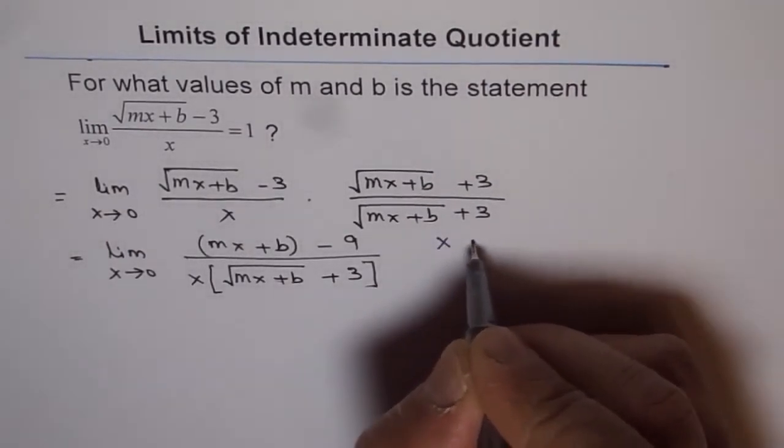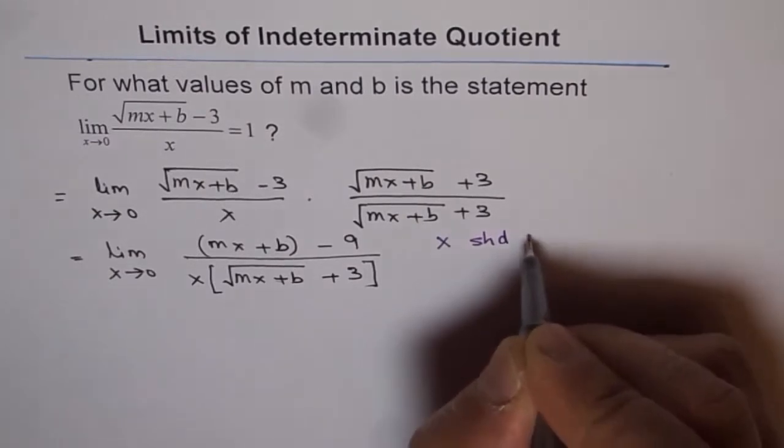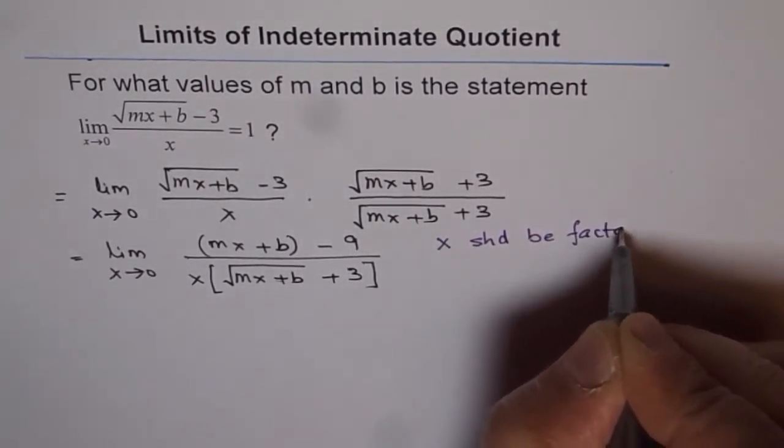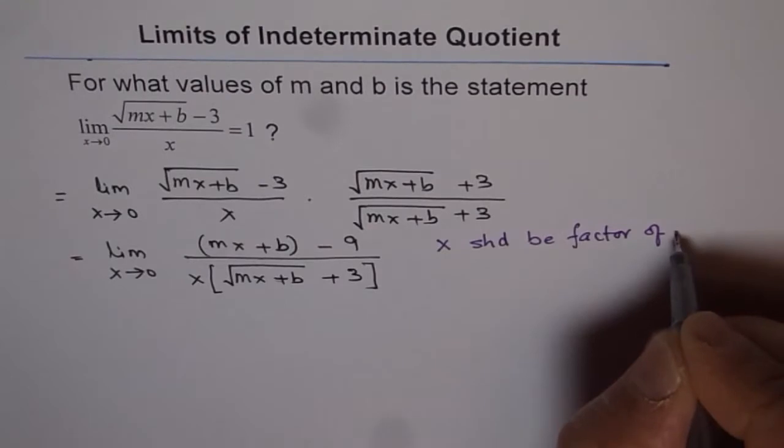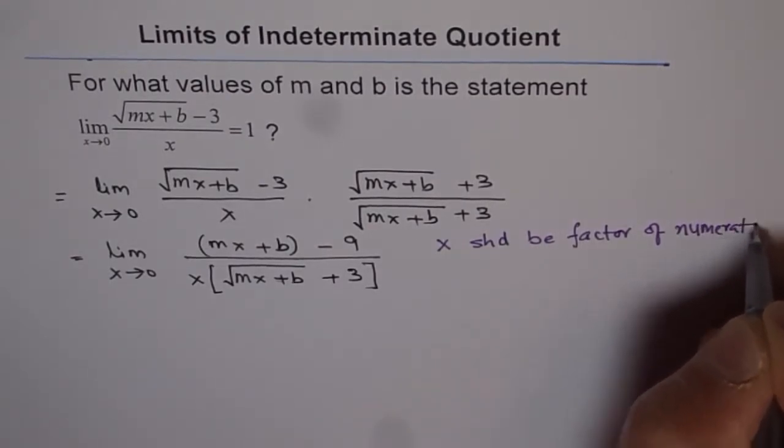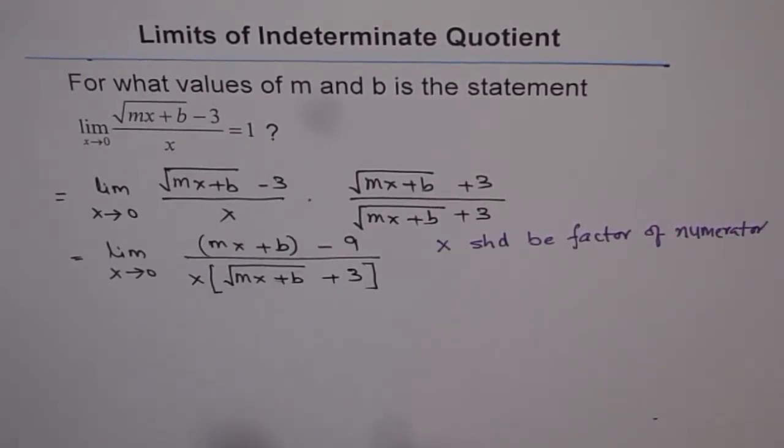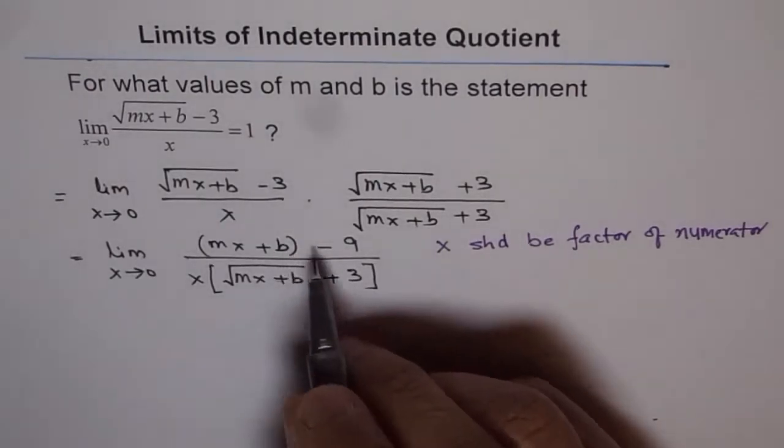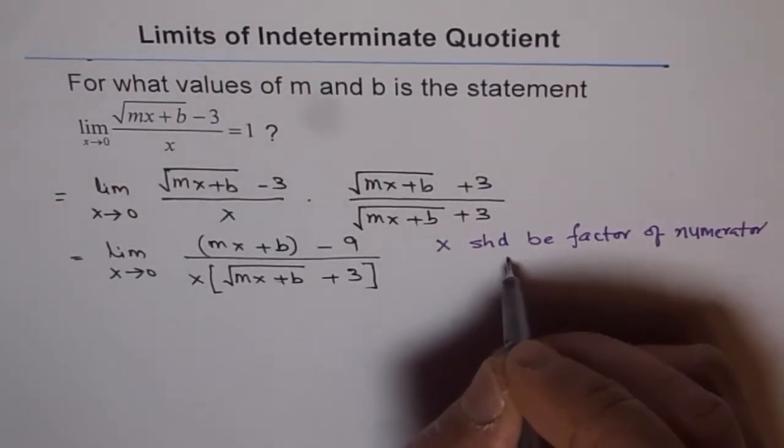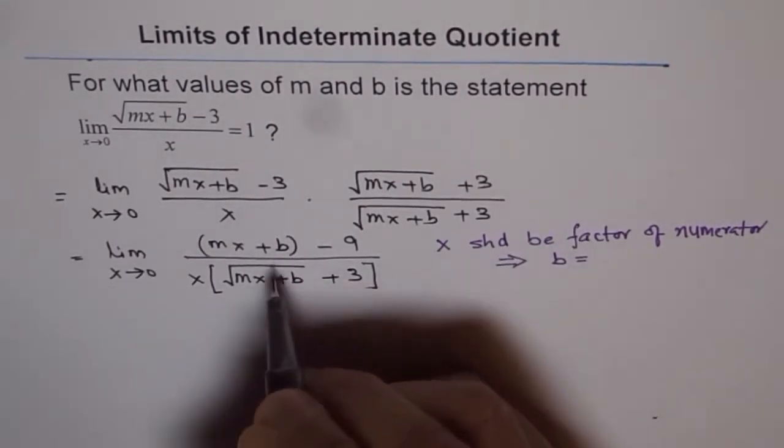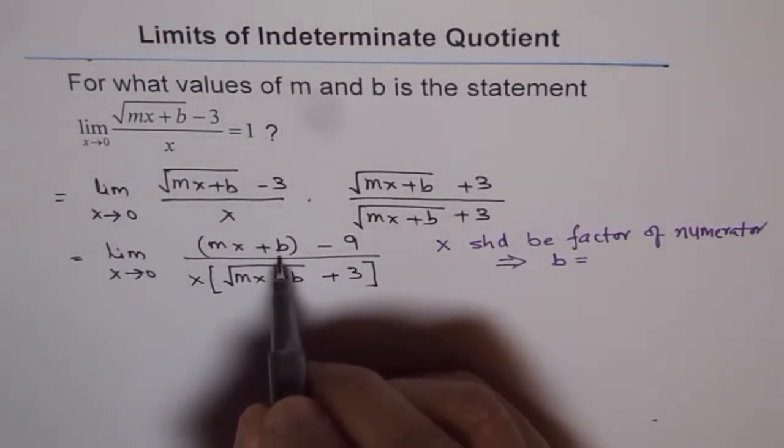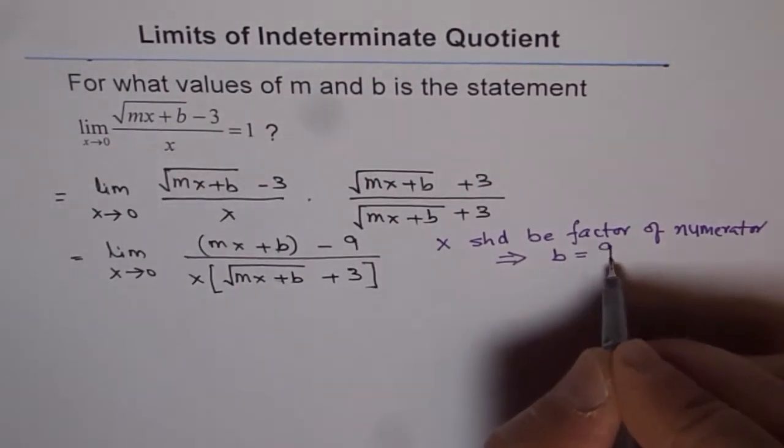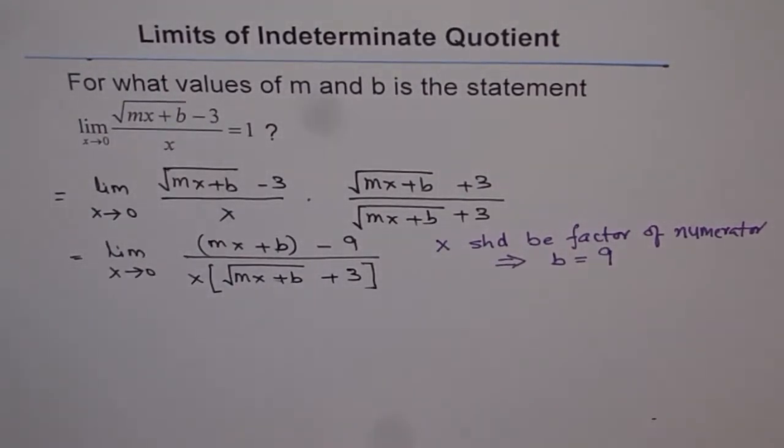Let me write it in a different thing, so that we understand it clearly. Now, x should be factor of numerator. That is what we need. Only then we get 0 over 0 form, this x gets cancelled out. Now, that is possible only if b is 9, because 9 minus 9 will become 0. This implies that b equals to 9. So we get a value of b as 9.